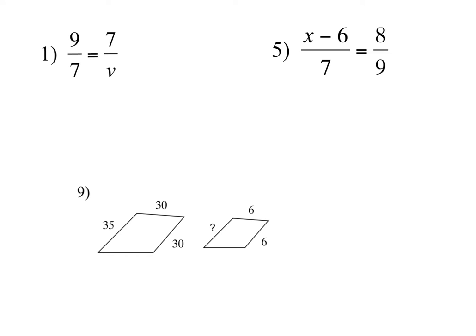All right, so the first sections are all about ratios. The way you solve a ratio is cross-multiplication. So you're going to say 9 times V equals 7 times 7, and then you're going to solve for X, or V, whatever.